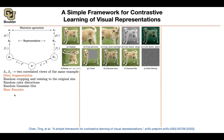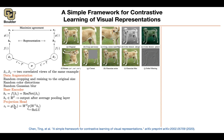You're going to have a base encoder, which is your F — that's your ResNet — and that's going to give you some representations. You're also going to have a projection head, which ends up being crucial. G is a fully connected neural network with two layers.